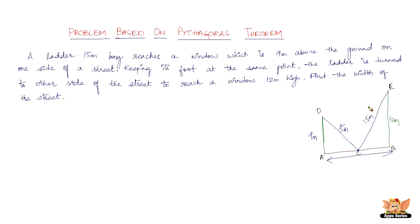AB is the width of the street. AD is one side of the street with a window at 9 meters, and BE is the other side with a window at 12 meters. The foot of the ladder is at C. We have two right angle triangles. If we find the third side of each triangle — AC and BC — and add them, we get AB, the width of the street. First apply Pythagoras theorem to triangle ACD, then to triangle BCE.